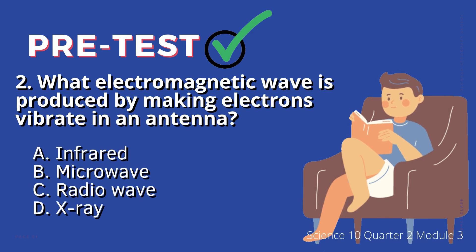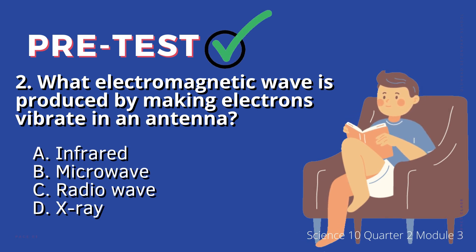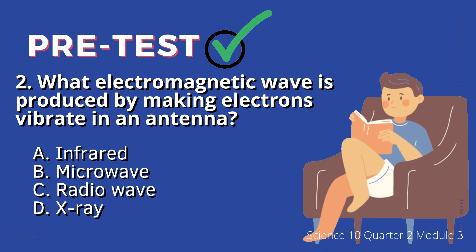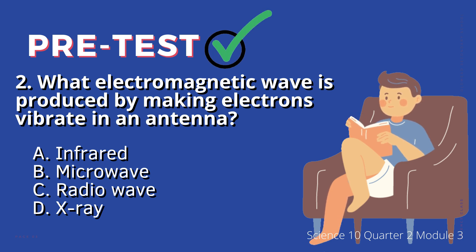2. What electromagnetic wave is produced by making electrons vibrate in an antenna? A. Infrared, B. Microwave, C. Radio wave, D. X-ray.